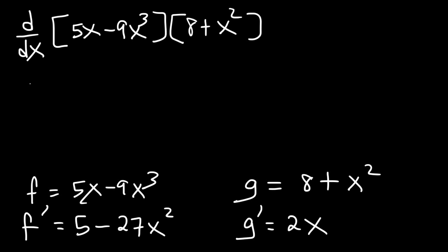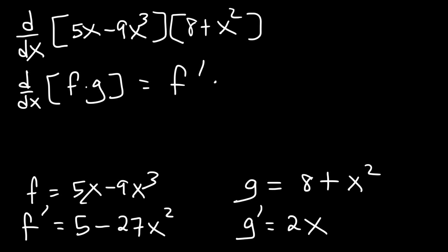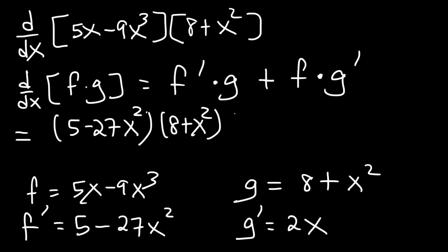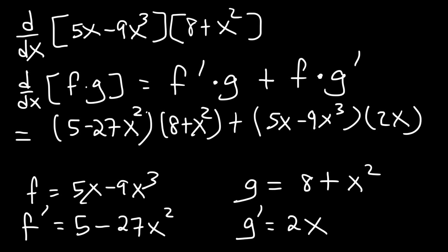Using the expression, the derivative of f times g equals f prime times the second part plus the first part times the derivative of the second. So f prime is 5 minus 27x squared, and g is 8 plus x squared, plus f which is 5x minus 9x cubed, and then g prime is 2x. And so this is the answer.